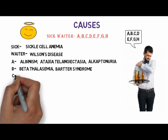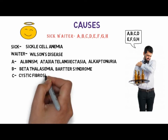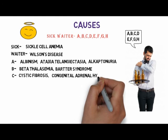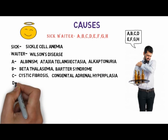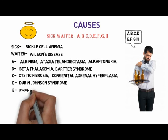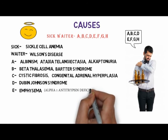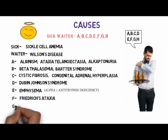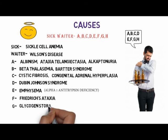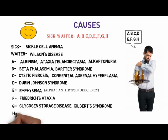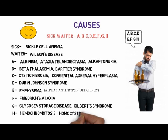C: cystic fibrosis, very frequently asked, and congenital adrenal hyperplasia. D: Dubin-Johnson syndrome. E: emphysema, that is alpha-1 antitrypsin deficiency. F: Friedreich's ataxia. G: glycogen storage disease and Gilbert's syndrome. H: hemochromatosis and homocystinuria.